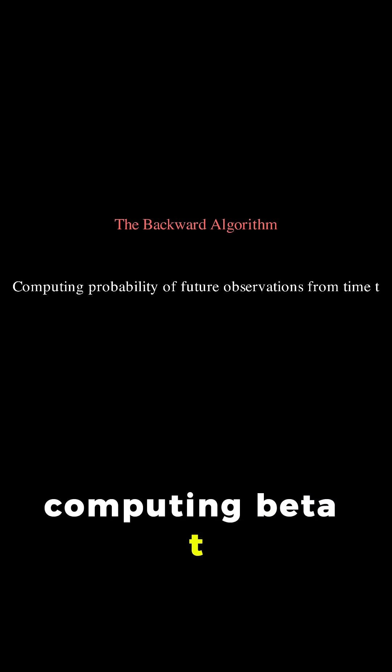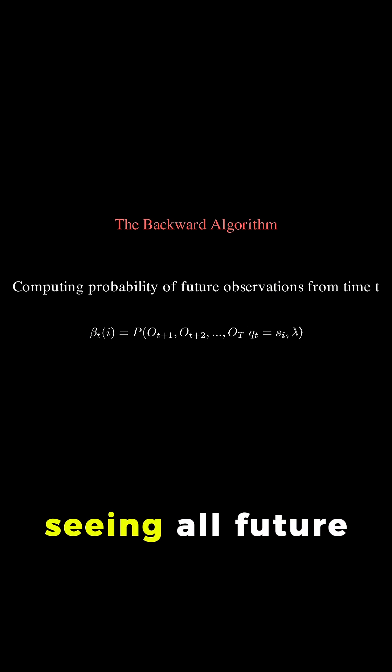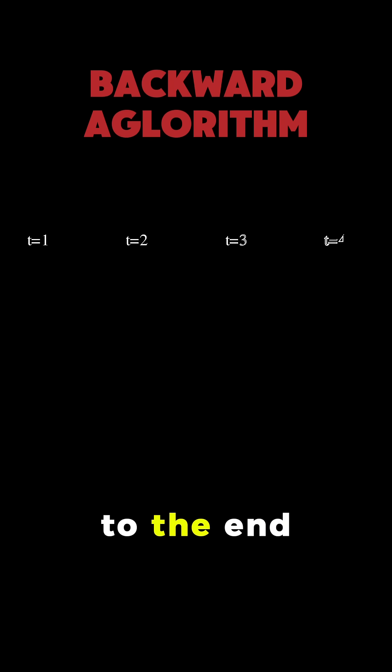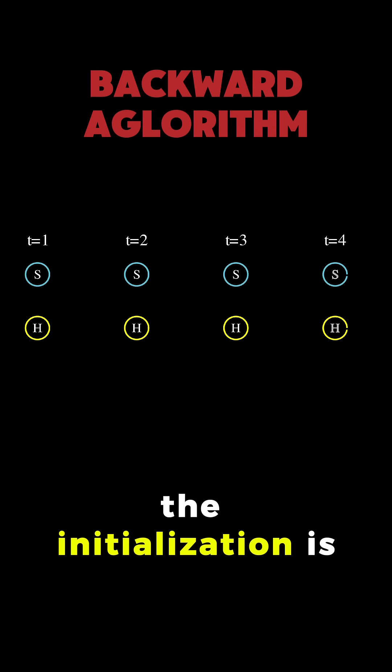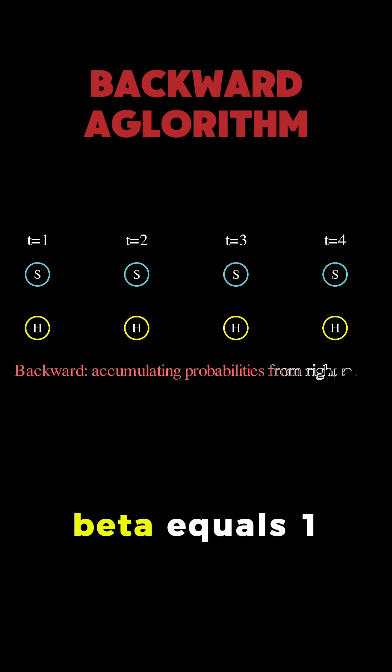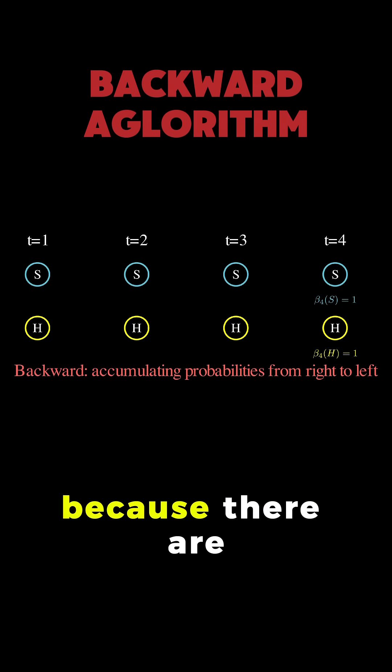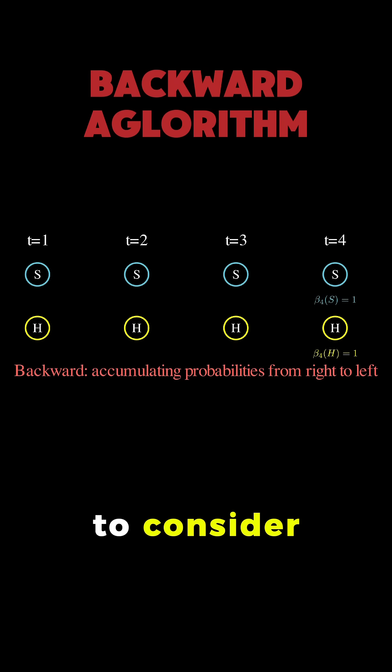Beta t of i represents the probability of seeing all future observations from time t plus 1 to the end, given that we are in state i at time t. The initialization is simple: beta equals 1 for all states because there are no future observations to consider.